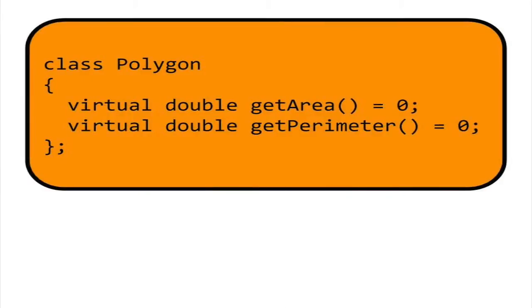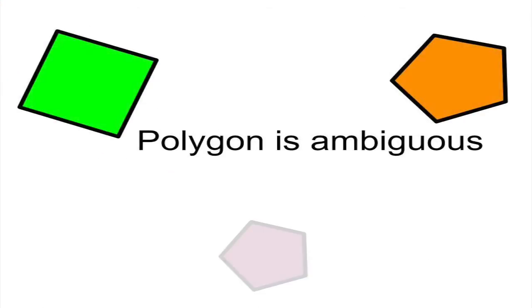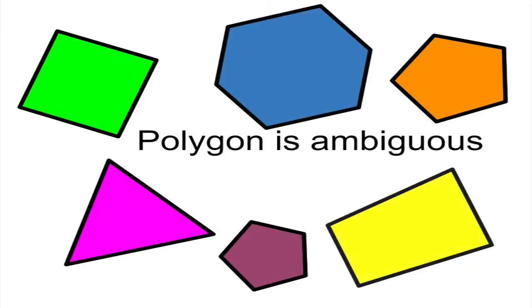Let's give the polygon class two virtual functions, getArea and getPerimeter. Note that we cannot determine the area or perimeter of a generic polygon since we don't know anything about its specific dimensions.